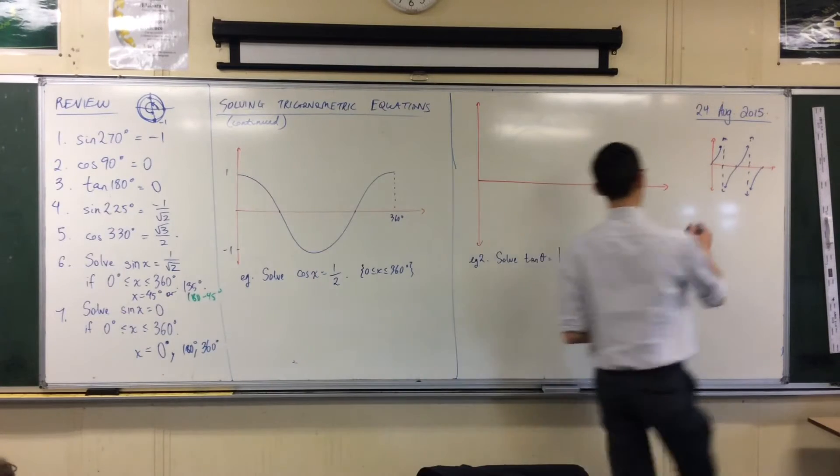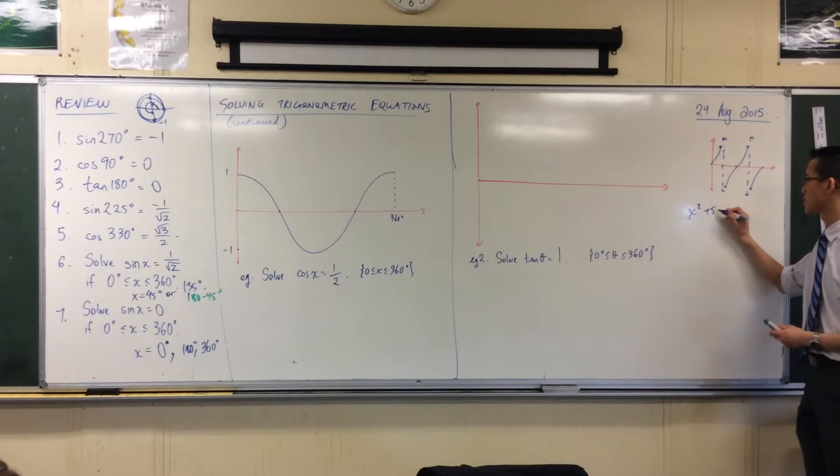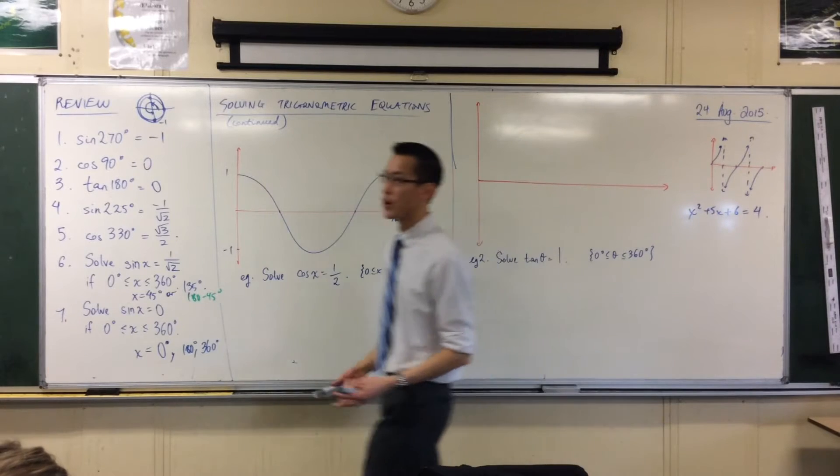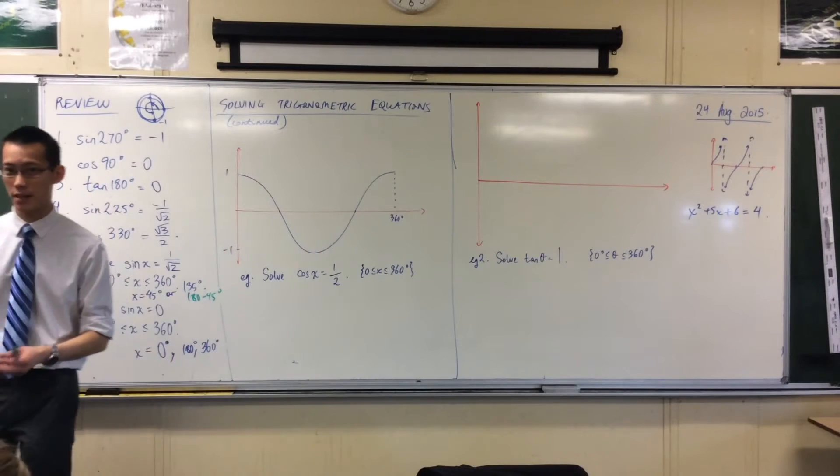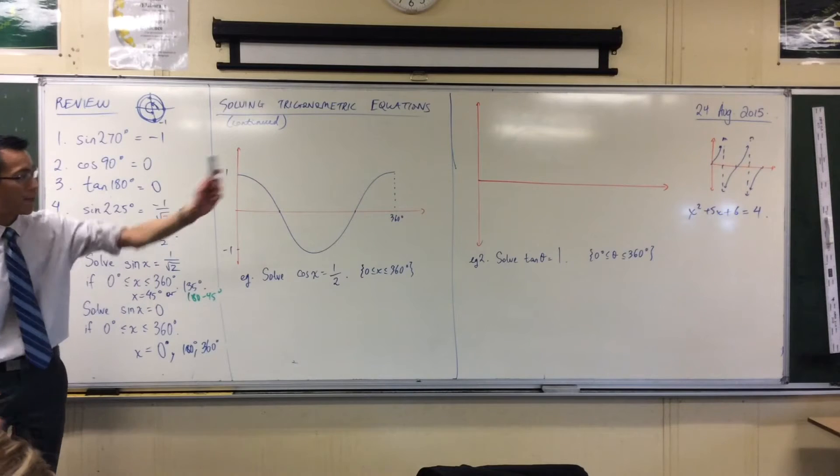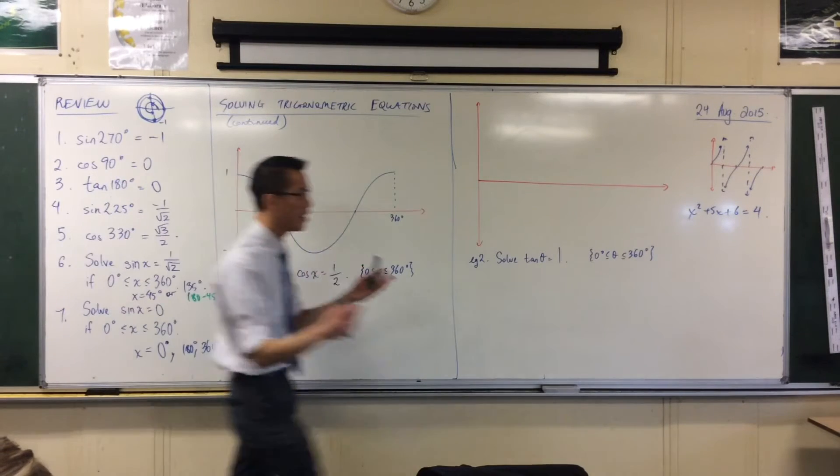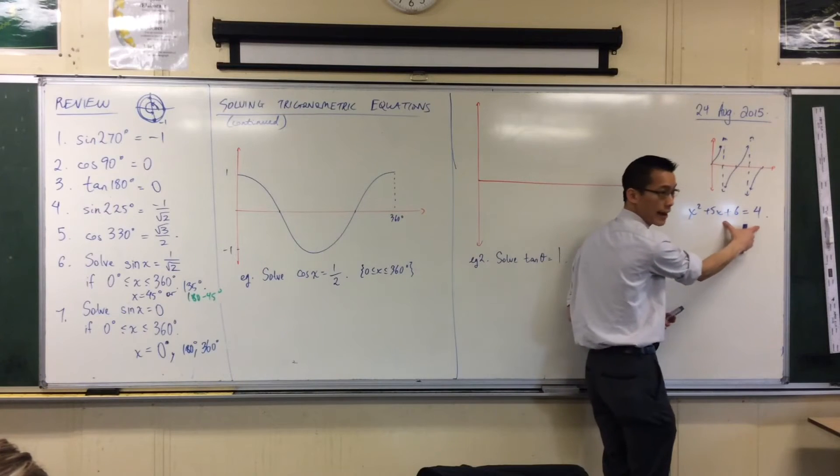So when I gave you this before, x squared plus 5x plus 6 equals 4, for instance, x squared plus 5x plus 6 is a graph. It's a parabola. And 4 is also a graph. It's a straight line horizontally and I'm looking for where these two collide.